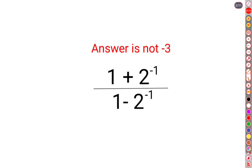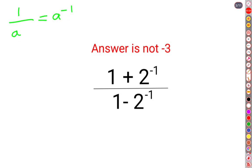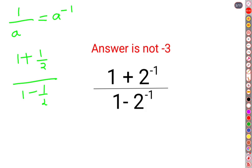A lot of people misunderstood that 2 raised to minus 1 is basically just multiplying — that's not right. Whenever you have 1 upon a, it is written as a raised to minus 1. So here we have 1 plus 1 upon 2, and similarly 1 minus 1 upon 2.